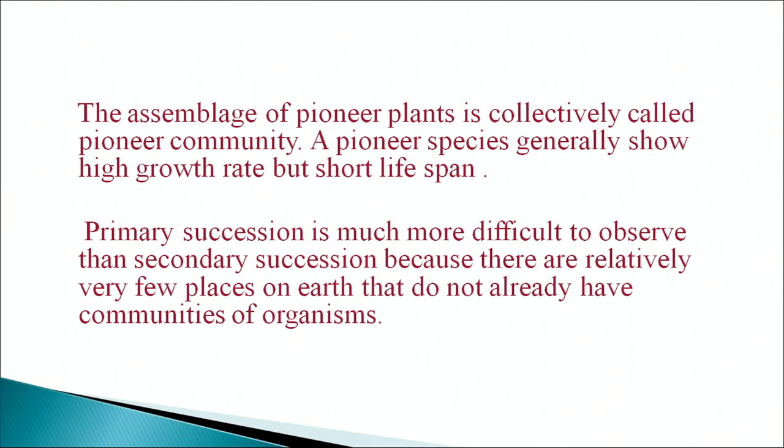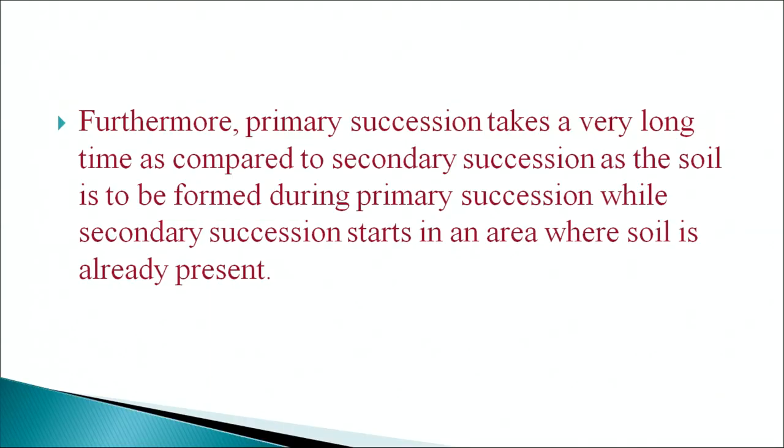The assemblage of pioneer plants is collectively called the pioneer community. Pioneer species generally show high growth rate but short lifespan. Primary succession is much more difficult to observe than secondary succession because there are relatively very few places on earth that do not already have communities of organisms. Furthermore, primary succession takes a very long time compared to secondary succession, as soil must be formed during the process, while secondary succession starts in an area where soil is already present.